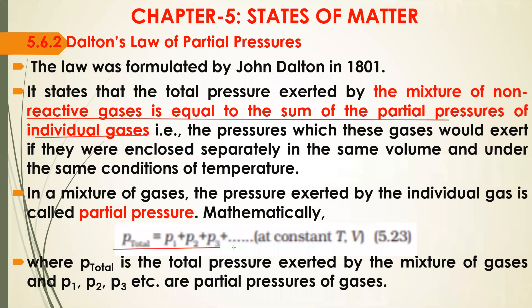The formula given is: P_total = P1 + P2 + P3 + ... up to the number of gases present. Each of these is called the partial pressure of the individual gas.